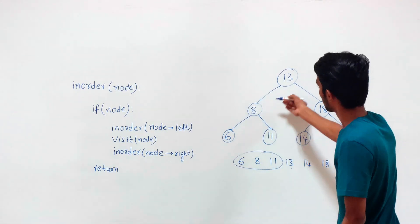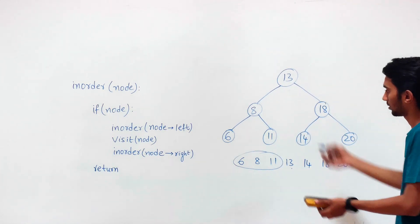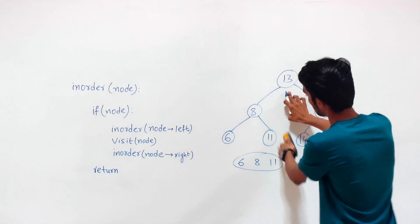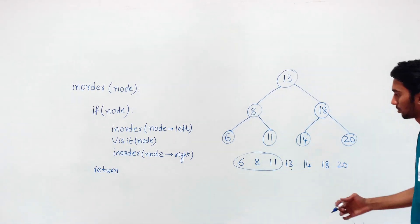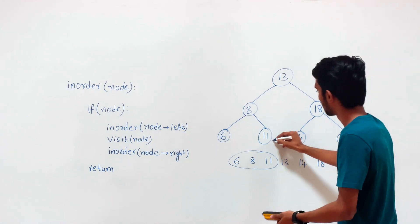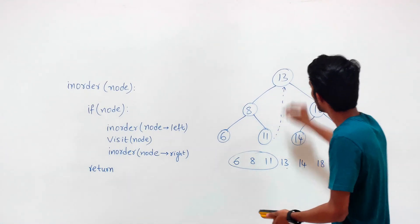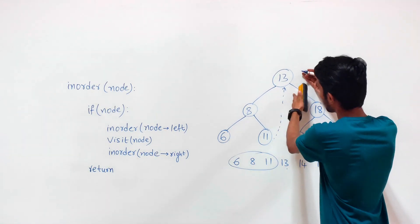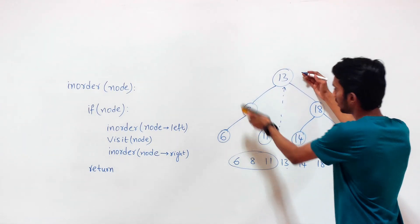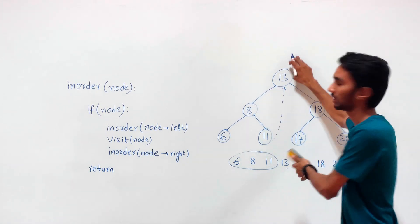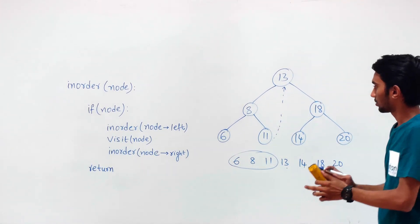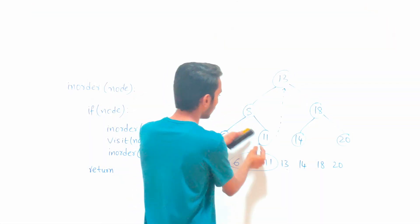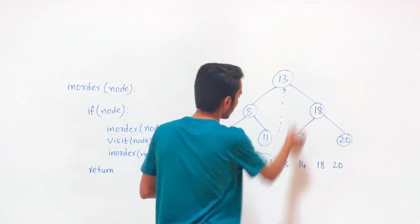In the left subtree, the predecessor is the rightmost node — so the rightmost node in the left subtree of the root node is 11, the predecessor. Morris in-order traversal links the predecessor to the root node before giving control to the left subtree. So before going from 13 to 8, we form this link, so that after visiting 6, 8, and 11, we can get back to 13 using this link.